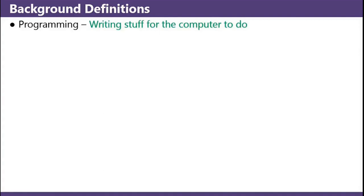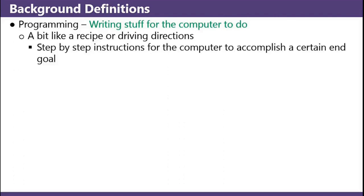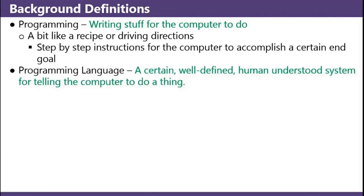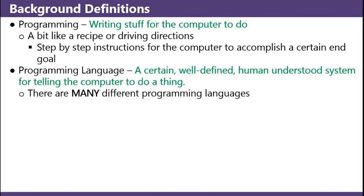A few background definitions. Programming is writing stuff for the computer to do. A bit like a recipe or driving directions, it's step-by-step instructions for the computer to accomplish a certain end goal. A programming language is a certain well-defined human-understood system for telling the computer to do a thing. There are many different programming languages.